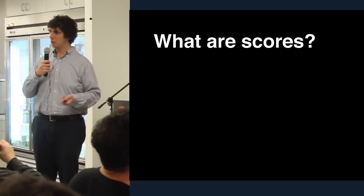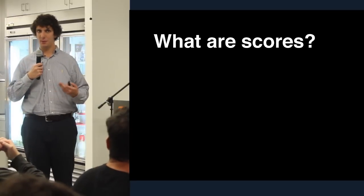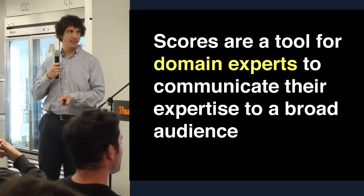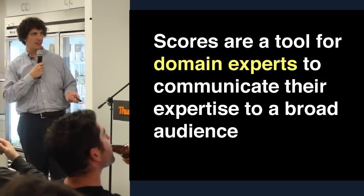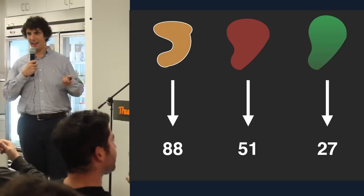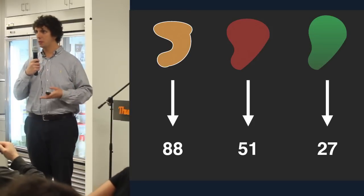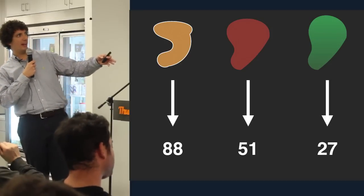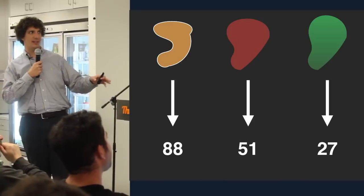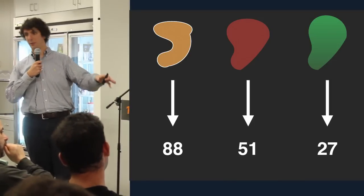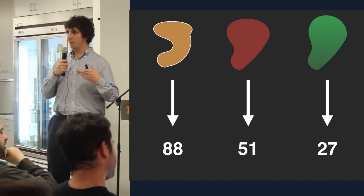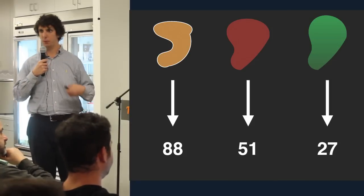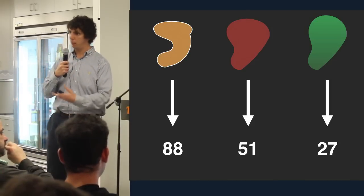Let's zoom out and talk about philosophy. What are scores? How would you describe what is happening when you score something? The best definition I've come up with is that scores are a tool for domain experts to communicate their expertise to a broad audience. You're taking a complex notion that may be largely unintelligible to a layperson and saying, I'm the expert — I can tell you this weird beige-orange blob on the left is an 88, whereas that greenish blob on the right is only a 27.